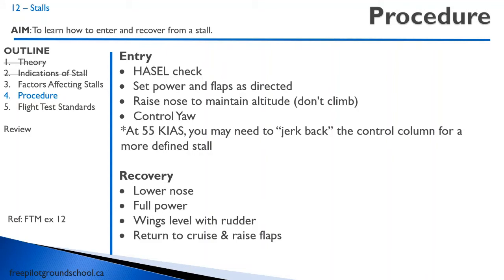In some aircraft at about 55 knots, you may have to jerk on the control column to get a more defined stall. Training aircraft are designed not to stall aggressively because they're supposed to be easy to fly for student pilots, so you may have to be more aggressive. Your instructor will show you how to do it properly. Recovery should be automatic and drilled into your head: when the aircraft stalls, immediately lower the nose, apply full power. If a wing drops, level the wings using the rudder — never the ailerons — and return to cruise and raise the flaps. When lowering the nose, you don't have to push aggressively forward; just release the back pressure to a gentle nose-down attitude. It has to be immediate, but not so aggressive that you're pulling negative g.